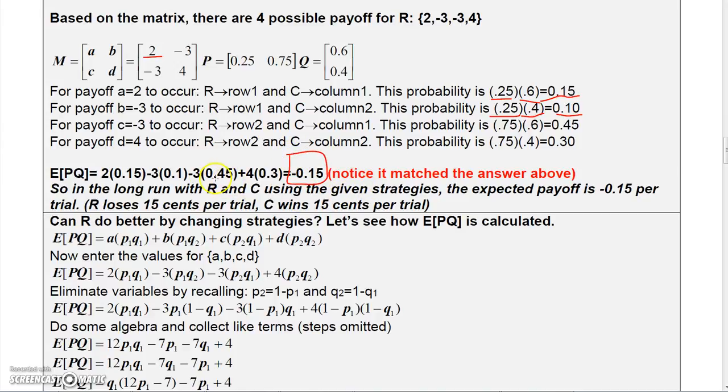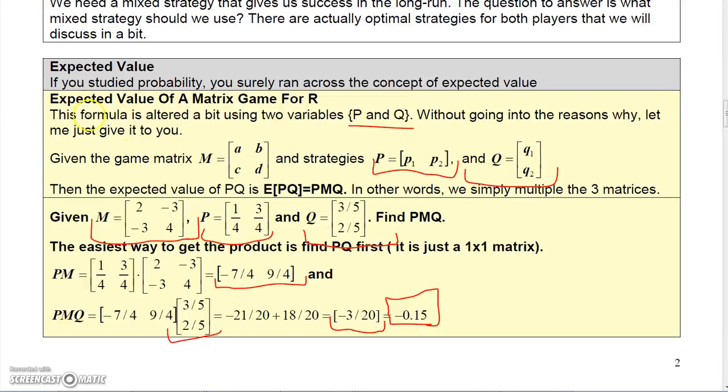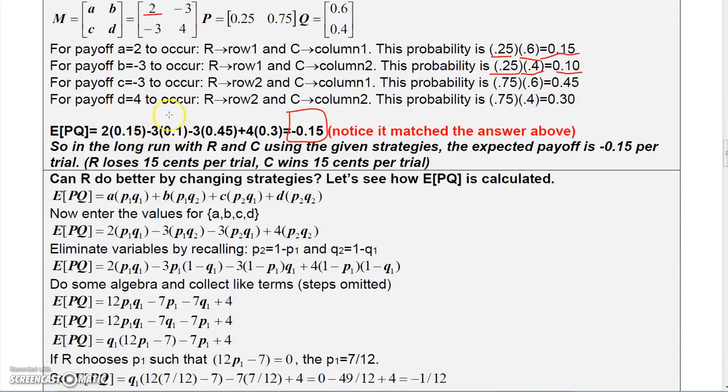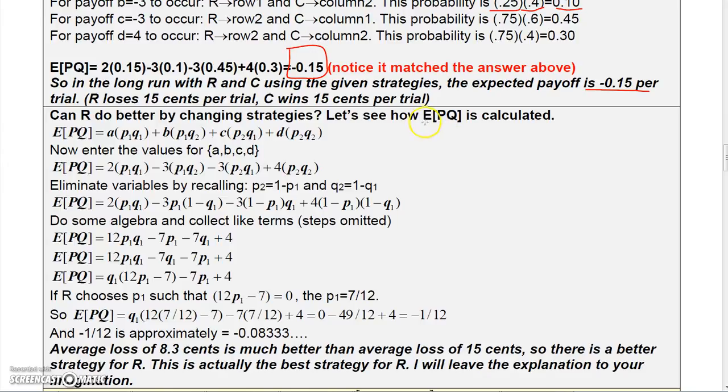But obviously we don't have to do it that way. You saw above, we can just multiply the product of P, M, Q. So in the long run, with R and C using those given strategies, the expected payoff is negative 15 cents per trial, and C wins 15 cents per trial. Now, can R do better than losing 15 cents per trial?